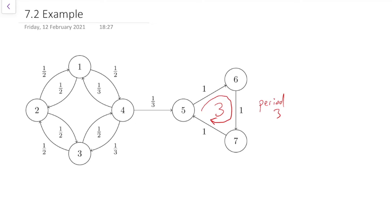What about on the left-hand side? Note that none of these states have arrows to themselves. If you start at, say, state 1, your next step is to 2 or 4, then your next step is to 1 or 3, then to 2 or 4, then to 1 or 3. So we've got this odd-even-odd-even repetitive behaviour going on again, and this is going to be period 2 for the same reason. So states 1, 2, 3, and 4 are periodic with period 2, and states 5, 6, and 7 are periodic with period 3.